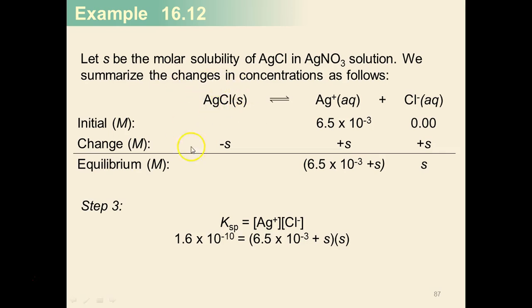This is going to decrease by some factor of s, and the concentration of both this and this will increase by a factor of s as it dissolves. It's only 1s because the stoichiometric coefficients in front of the silver and chloride are both 1.